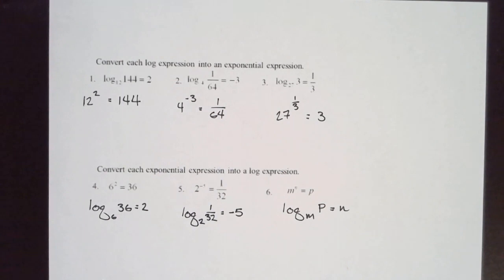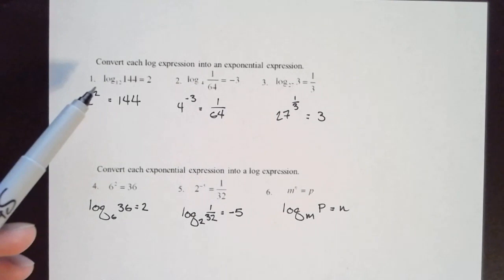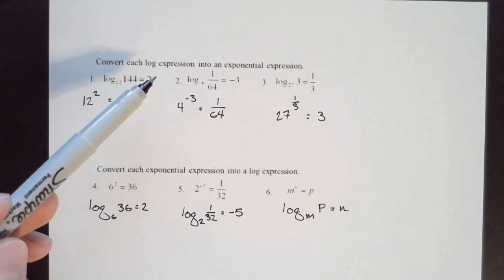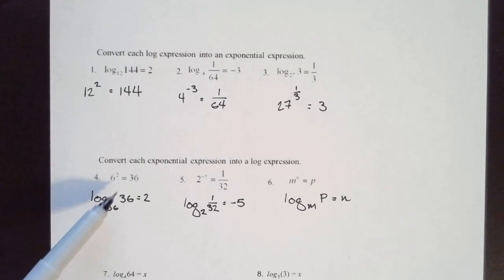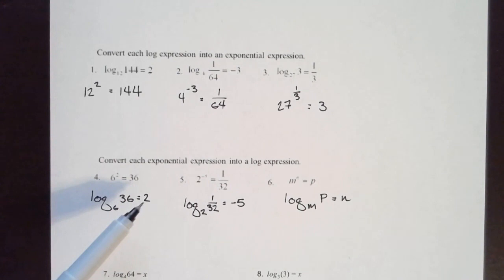I know that 2 is my exponent and from there the other numbers seem to fall into place — the base is 12, and 12 squared is 144. If you're going the other way, 6 squared equals 36, so this 2 needs to go by itself on one side of the equation, 6 is the base, and 36 becomes the argument. Always remember: when it's in log form, the exponent is by itself on one side.